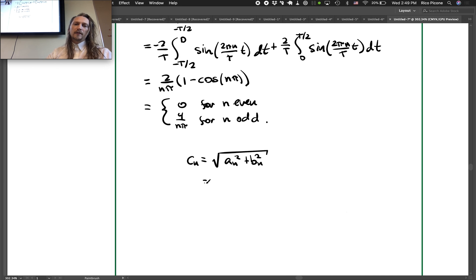bn is actually not defined for n equals 0 but when we do c0 we only will take the square root of a0 squared and a0 like all the a's is going to be 0. So c1 equals the square root of a1 squared plus b1 squared which equals 4 over pi.